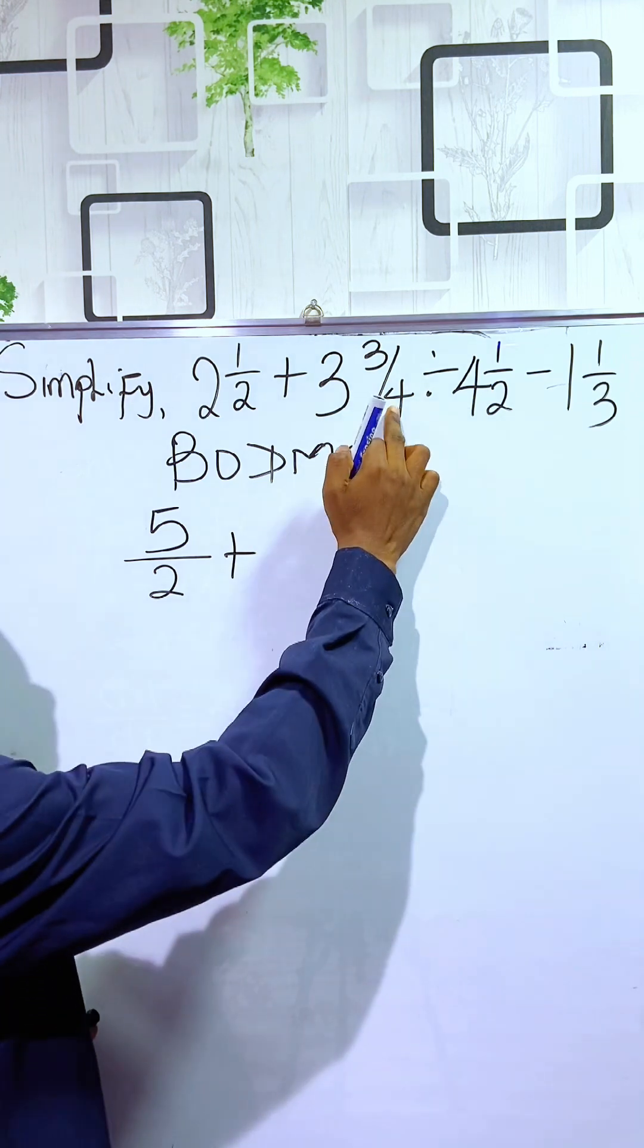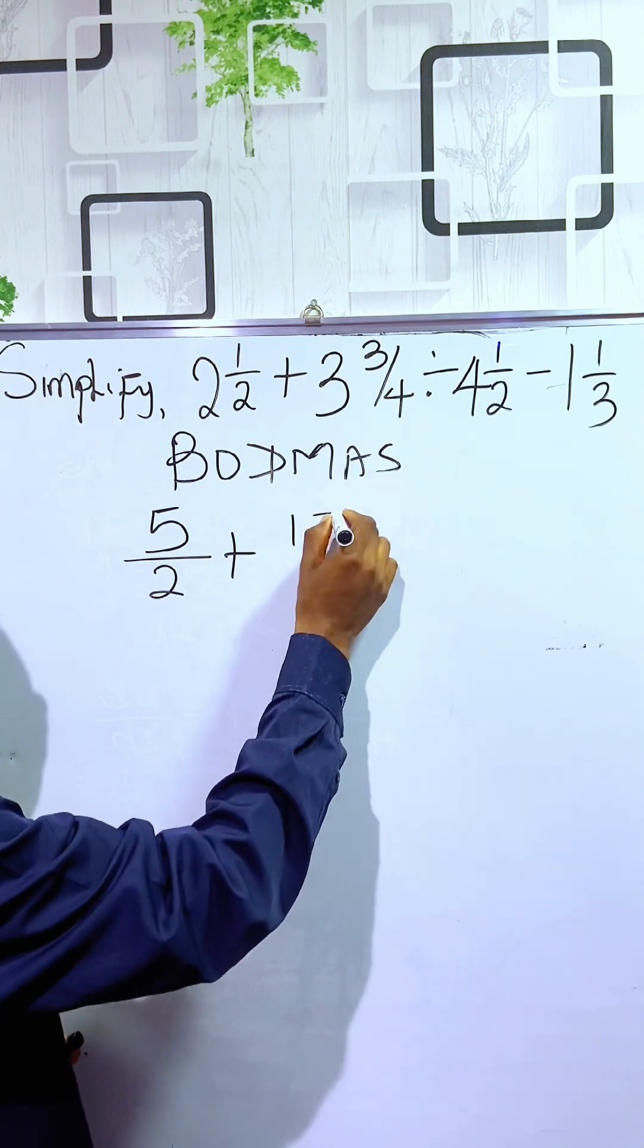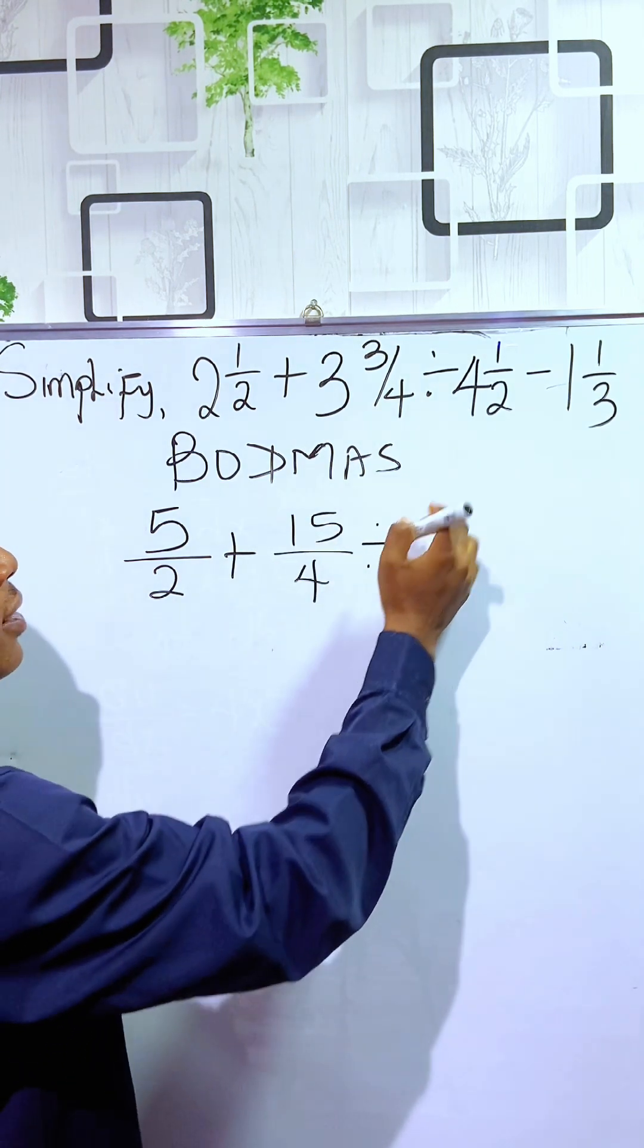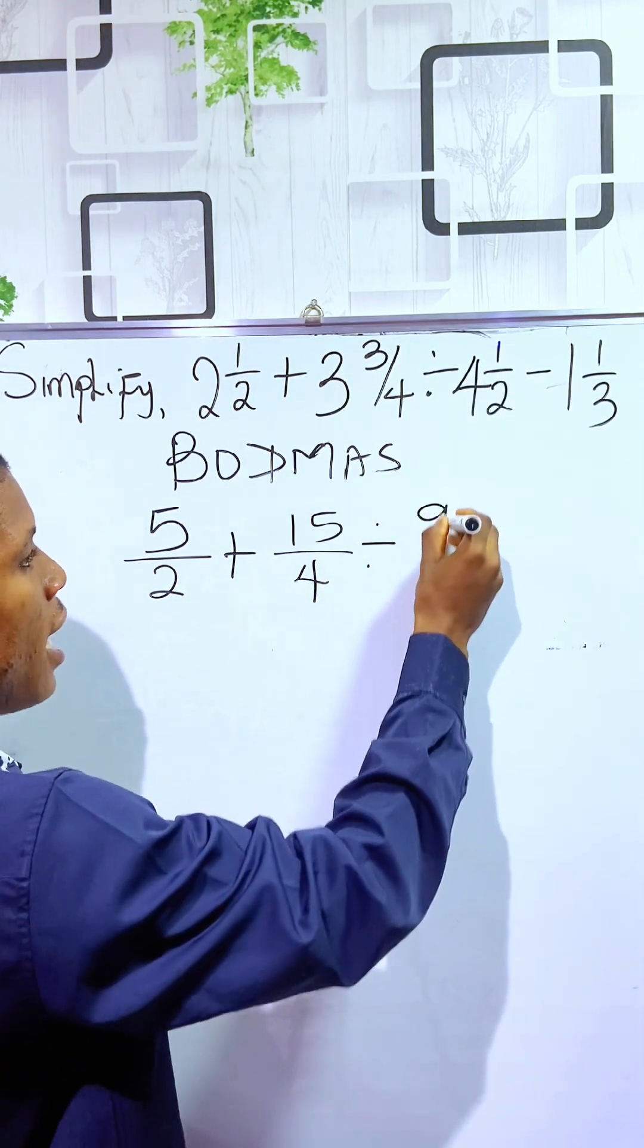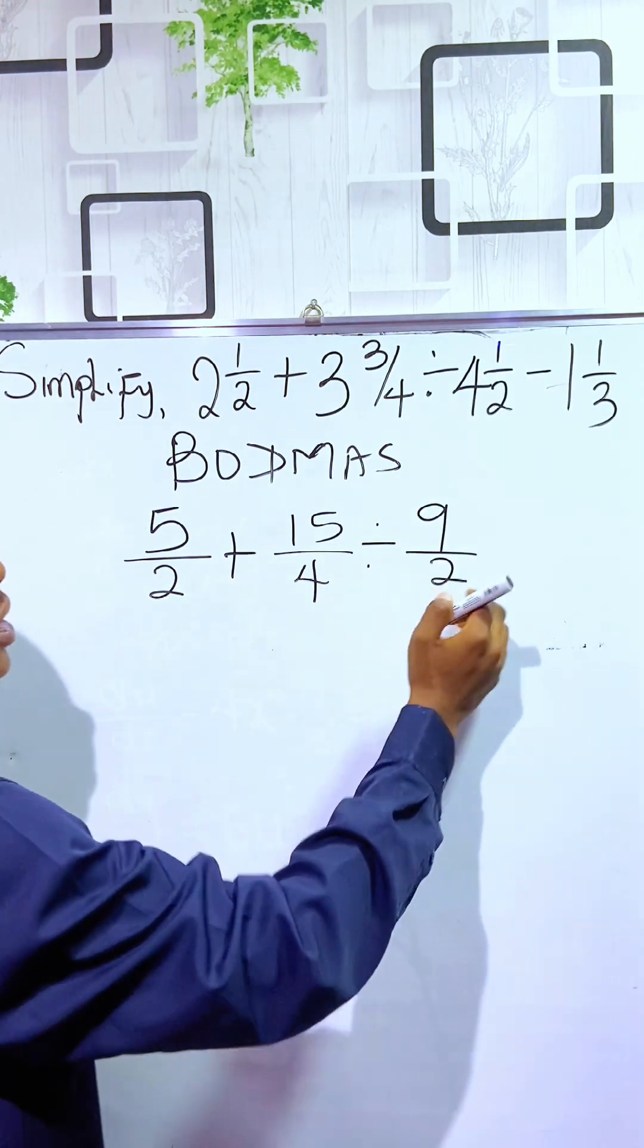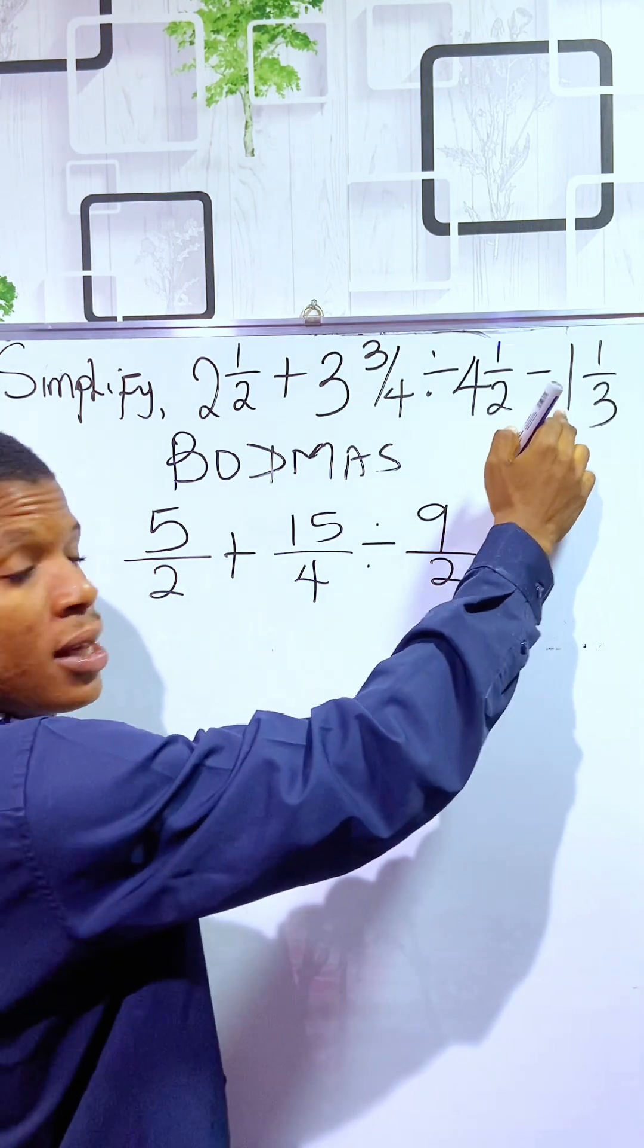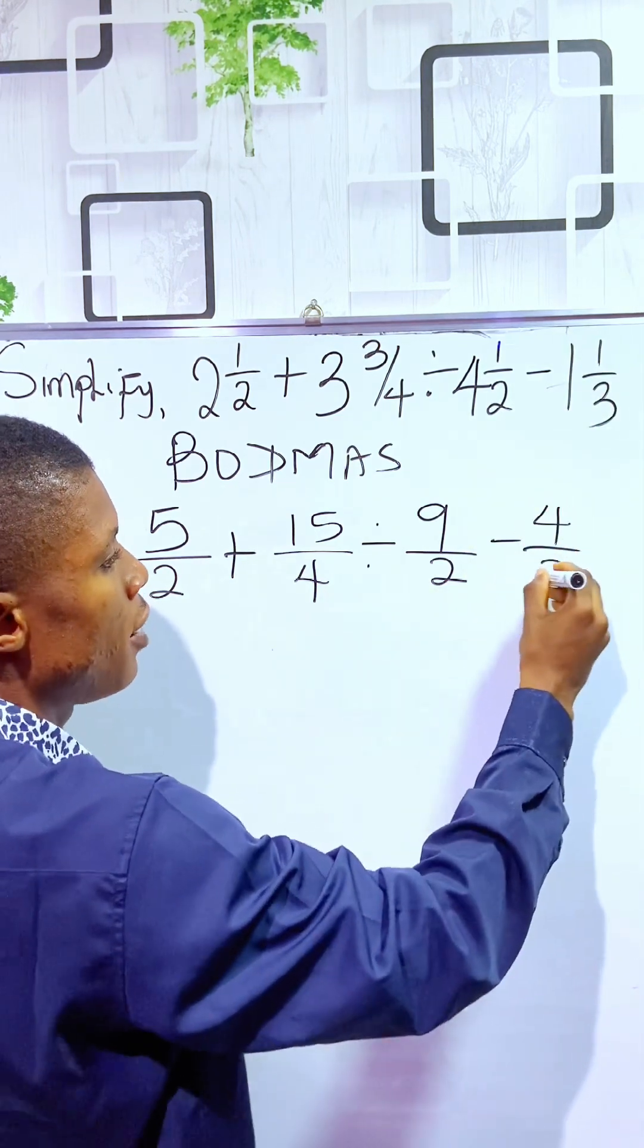At a constant denominator, plus 3 times 4 is 12. Plus 3 is 15. I have 15 over 4. Divided by 4 times 2 is 8, plus 1 is 9. I have 9 over 2. Then 1 times 3 is 3, plus 1 is 4, minus 4 over 3.